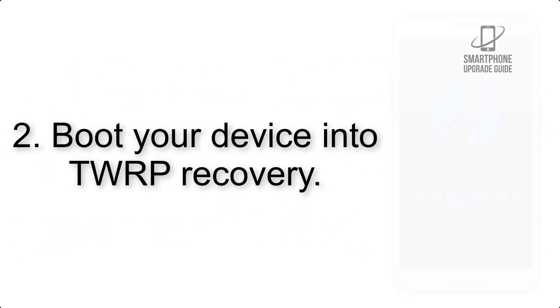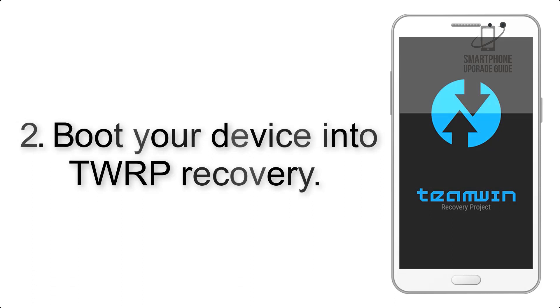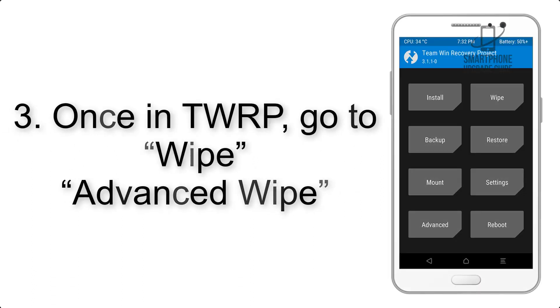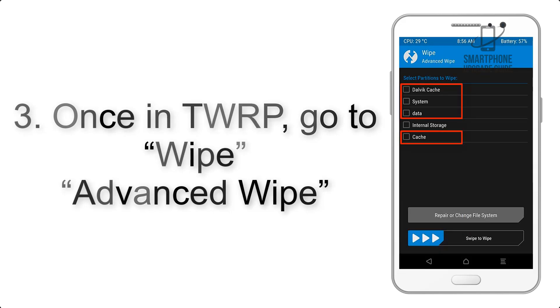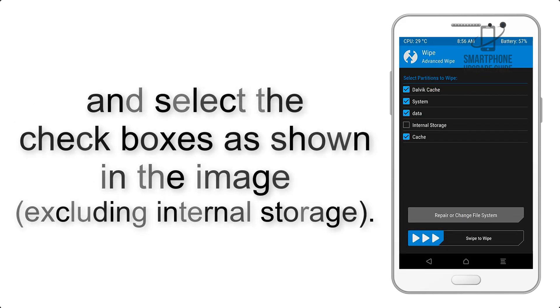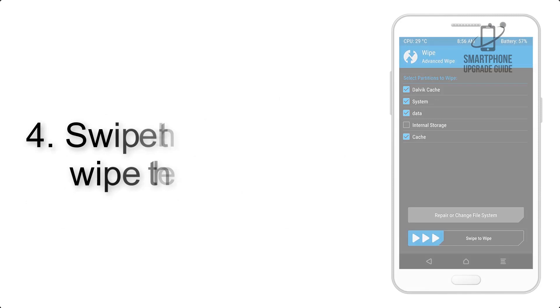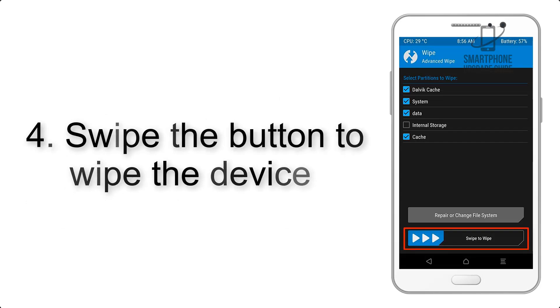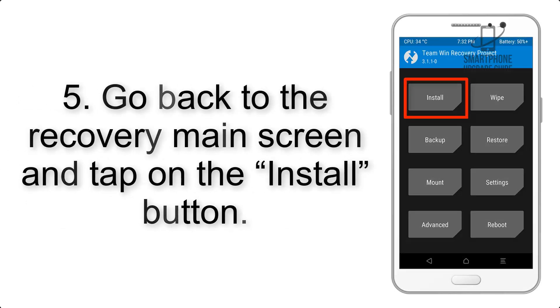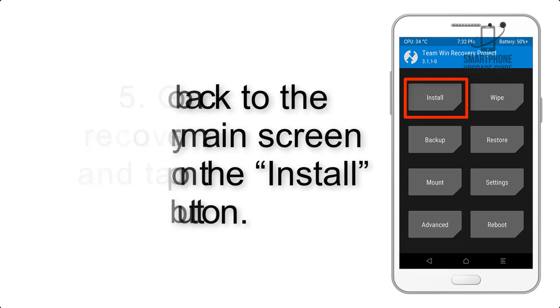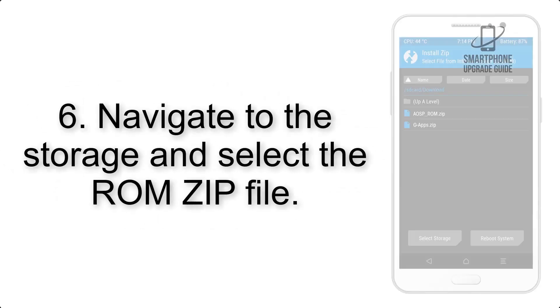Step 2: Boot your device into TWRP recovery. Once in TWRP, click on Wipe, then Advanced Wipe, and select the checkboxes as shown in the image, excluding internal storage. Step 4: Swipe the button to wipe the device. Step 5: Go back to the recovery main screen and tap on the Install button.